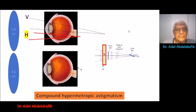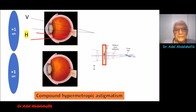If we add plus 1, everything starts to move forward. Now, one of the meridians is on the retina.